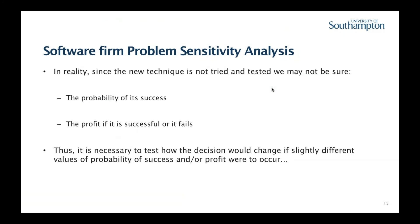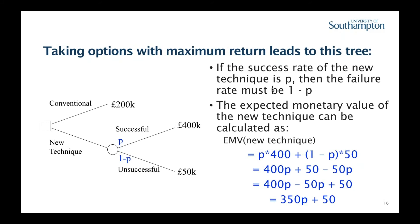A sensitivity analysis asks: how would our decision depend on uncertainty in the probability of success or uncertainty in the profit? We go back to our decision tree and say we don't have a specific probability — we just know there's a probability P that it's successful, and one minus P that it's unsuccessful. We can then calculate the expected monetary value as a formula: P times 400,000 plus (1 − P) times 50,000. That gives us an expression for the expected monetary value: probability of success times the outcome of success, plus the probability of failure times the outcome of failure.